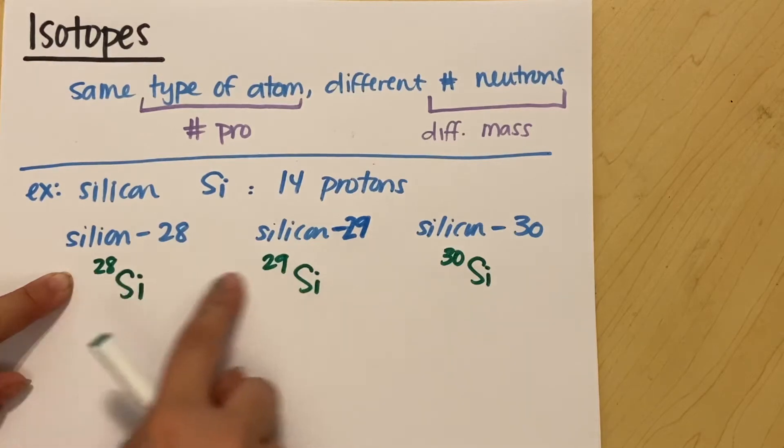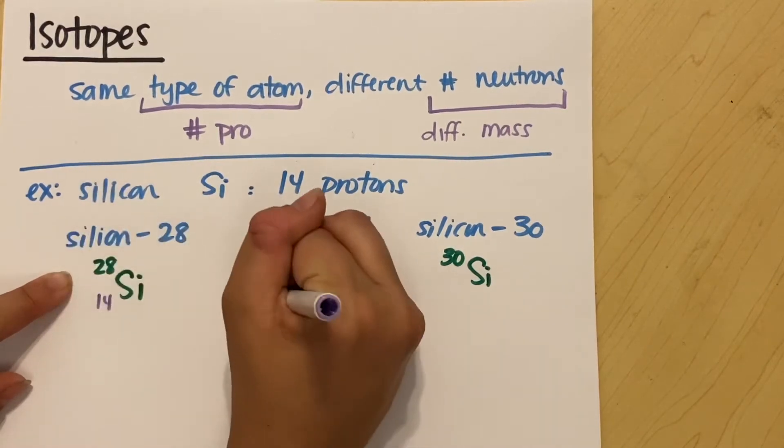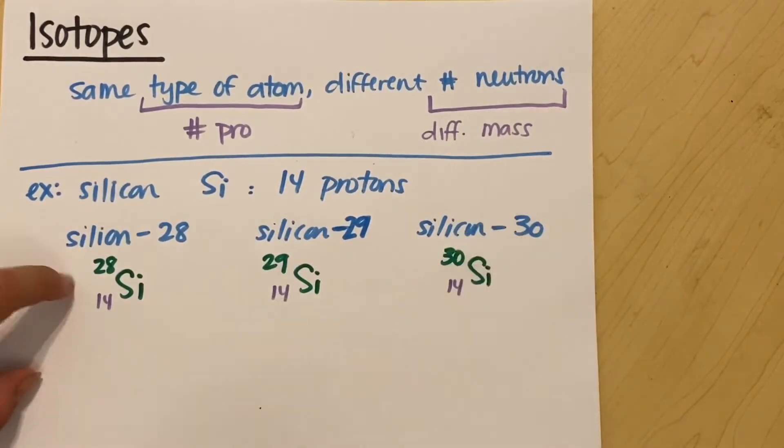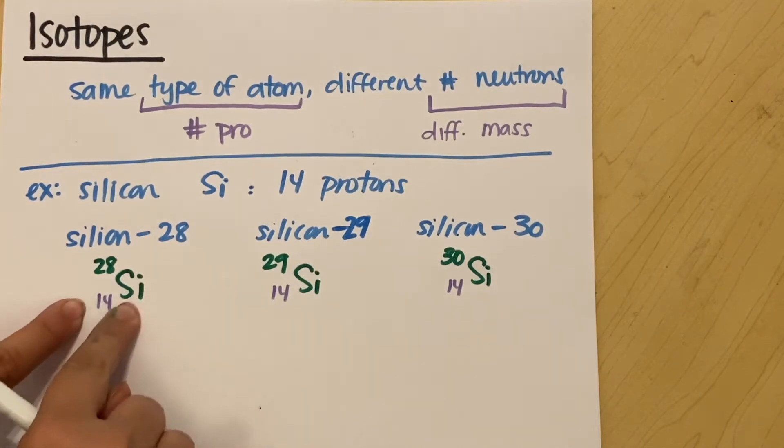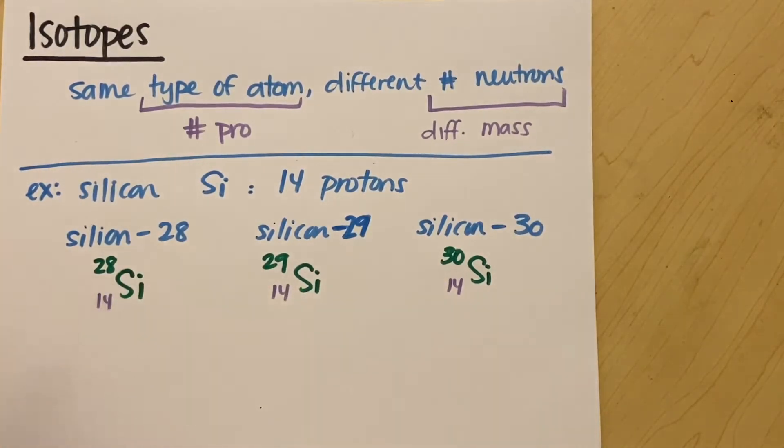But no matter what, each one of these silicons has to still have 14 as its number of protons. That's what identifies silicon as the silicon atom, is that it has 14 protons. So what is the only difference between these silicons? Is they have to have a different number of neutrons.